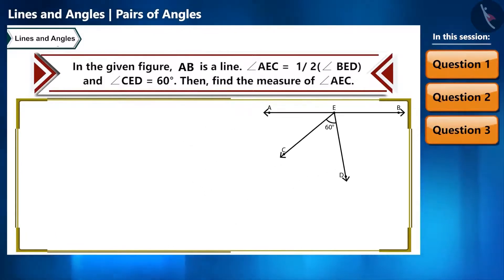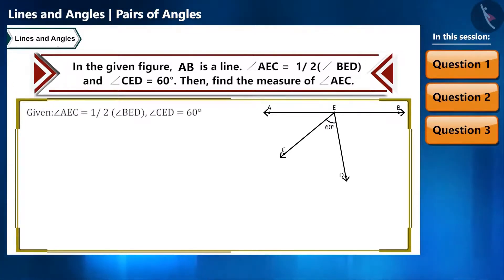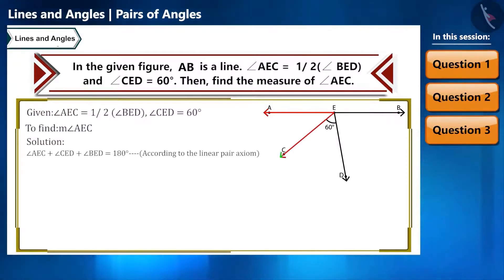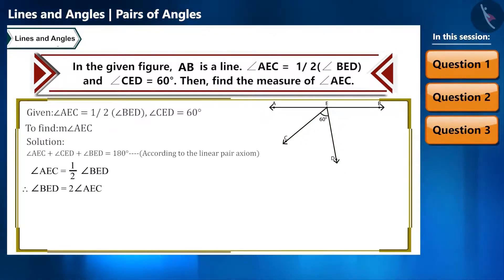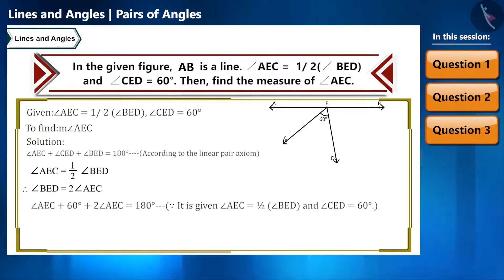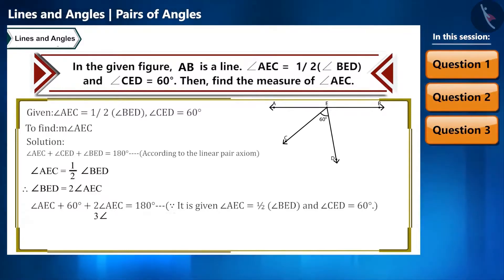Next question: angle AEC equals half of angle BED, and angle CED equals 60 degrees. Find the measure of angle AEC. We know angle AEC plus angle CED plus angle BED equals 180 degrees. Writing 2 times angle AEC in place of angle BED: angle AEC plus 60 plus 2 angle AEC equals 180 degrees. Simplifying: 3 angle AEC equals 120, so angle AEC equals 40 degrees.